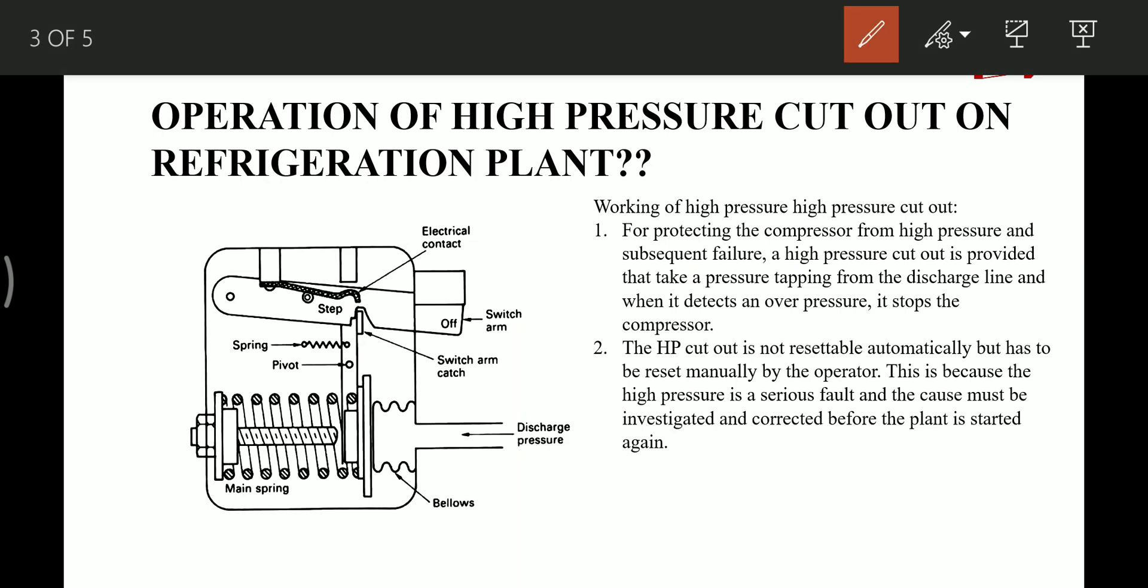How does it work? How does it operate? Before that, let's see the important parts. This is the pipe connecting the discharge pressure side of the compressor. Then this is the bellow in which this discharge pipe is connected. Then this is the main spring. We have this nut which is used to set the pressure of this high pressure cutout. Then we have this arm catch.